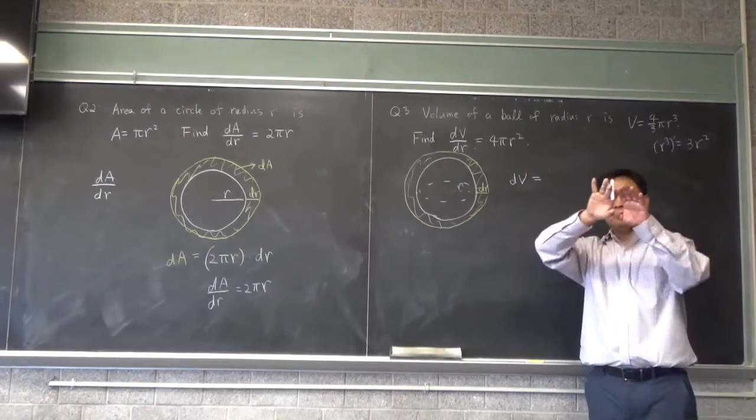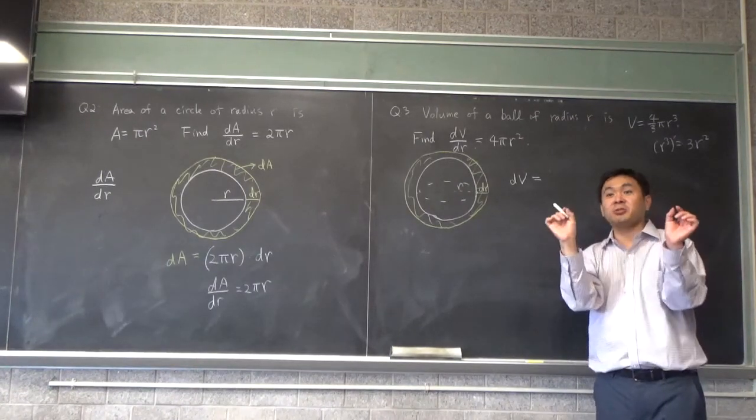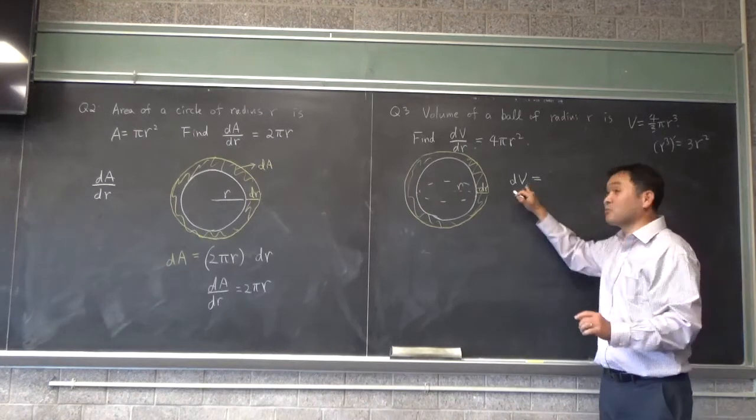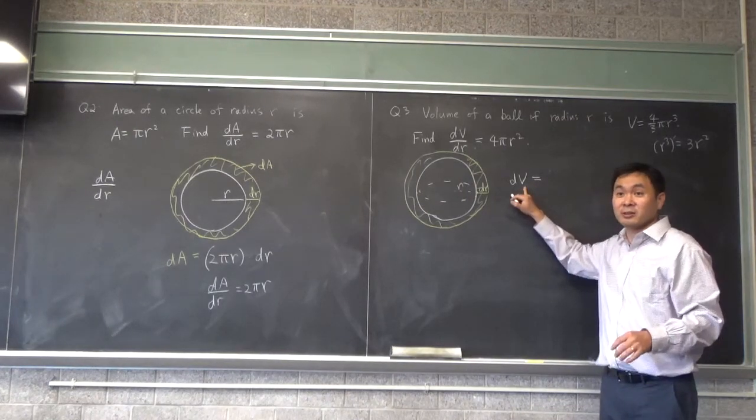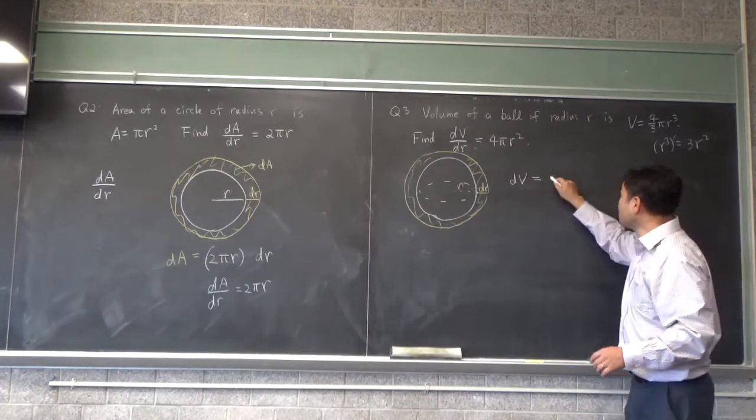Now think about what the formula for dV must be. Well, if you take the surface area of the sphere and you thicken it just by dr, you're going to get the volume of increase. Do you agree? So dV must be surface area times dr.